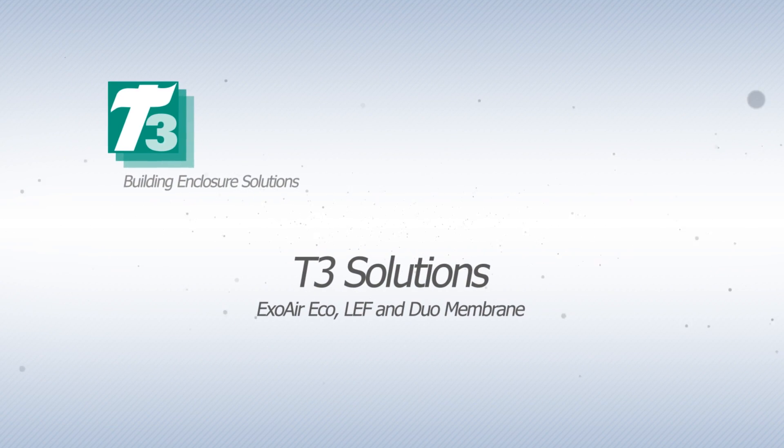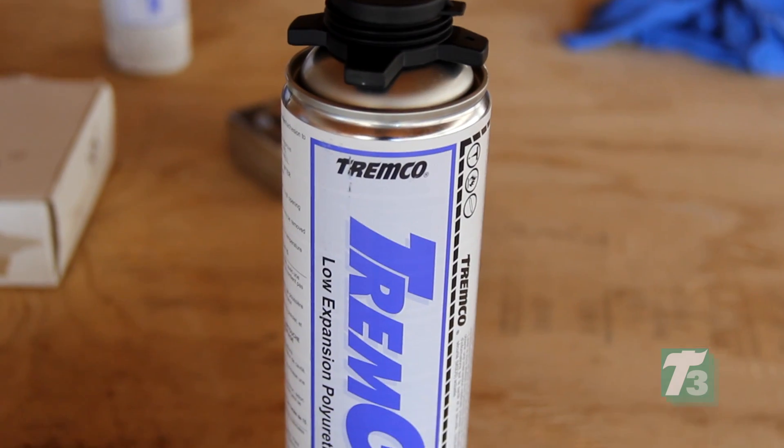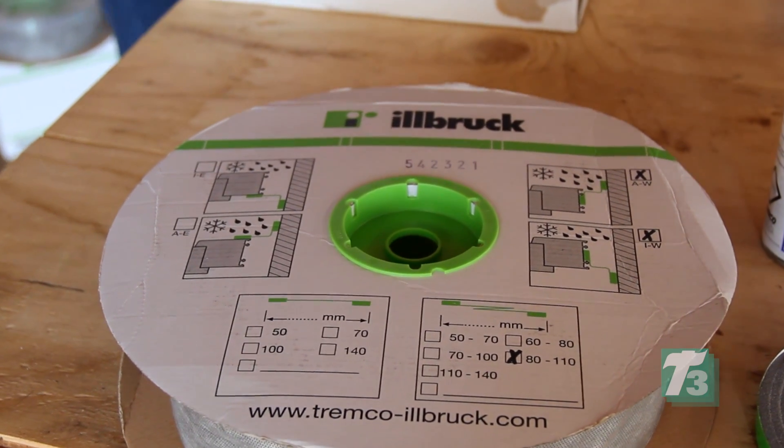In this module, we will be installing a window using Tremco's ExoAir Eco as an exterior seal, ExoAir LEF Foam as a thermal insulating layer, and ExoAir Duo Membrane as the interior seal.